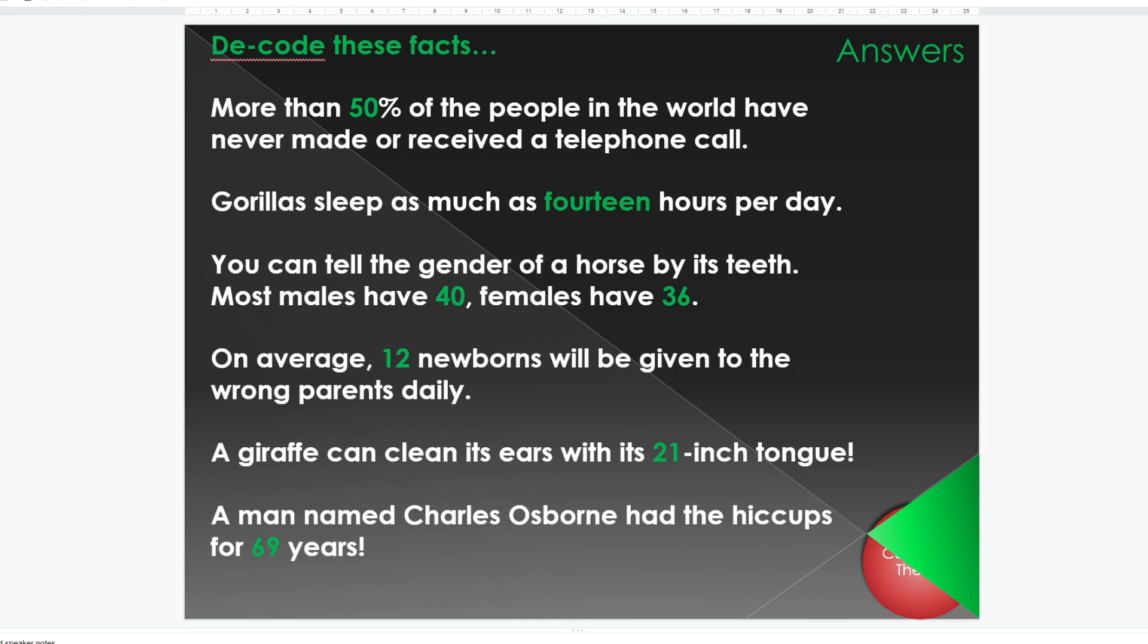Right, so if you've done that task of converting the binary into denary, these are the answers. So, more than 50% of the people in the world have never made or received a telephone call. Gorillas sleep as much as 14 hours per day. I feel like I need that much sleep sometimes. You can tell the gender of a horse by its teeth. Most males have 40 and females have 36. On average, 12 newborns will be given to the wrong parents daily. A giraffe can clean its ears with its 21 inch tongue. And a man named Charles Osborne has had the hiccups for 69 years. That's unbelievable to me sometimes, but they are true facts.